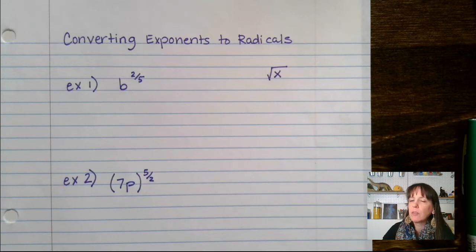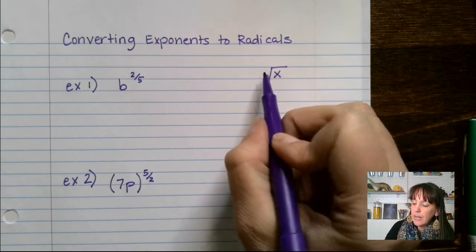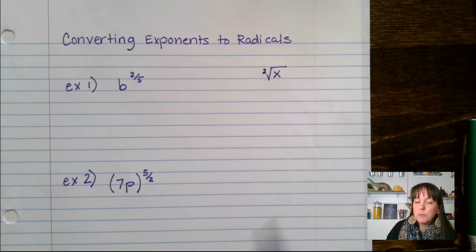Previously, I've talked about invisible math, things that mathematicians just assume that you know but that are not written. When we're talking about a square root, there's a 2 assumed to be here.